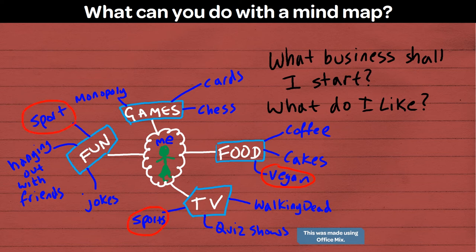How about vegan sports? Oh, I'll start a vegan sports cafe. Okay, so that was my first use for mind map. But what else can I use it for?